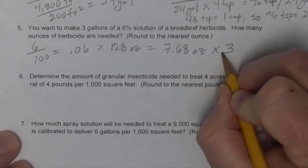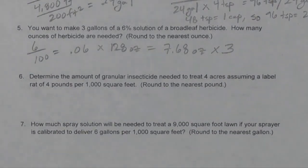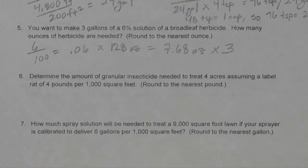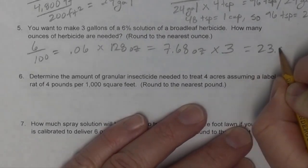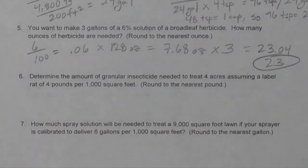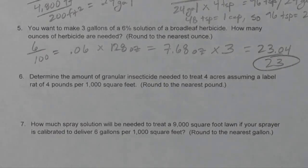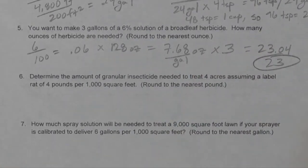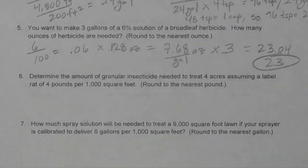We're making 3 gallons, so we multiply 7.68 times 3, which equals 23.04. Rounded down, that's 23 ounces. So 6% (0.06) times 128 ounces per gallon equals 7.68 ounces per gallon, and for 3 gallons we need roughly 23 ounces of herbicide.